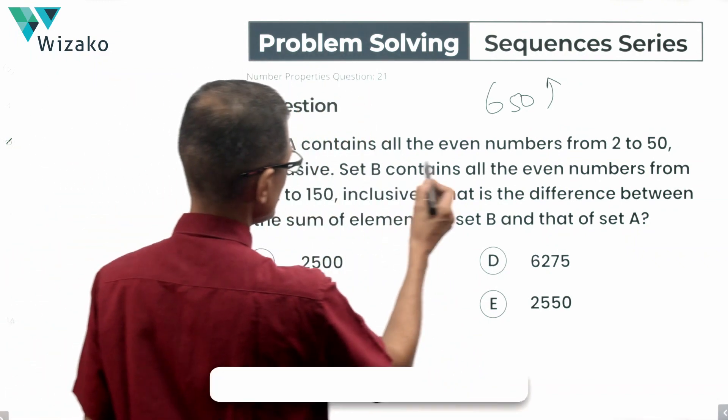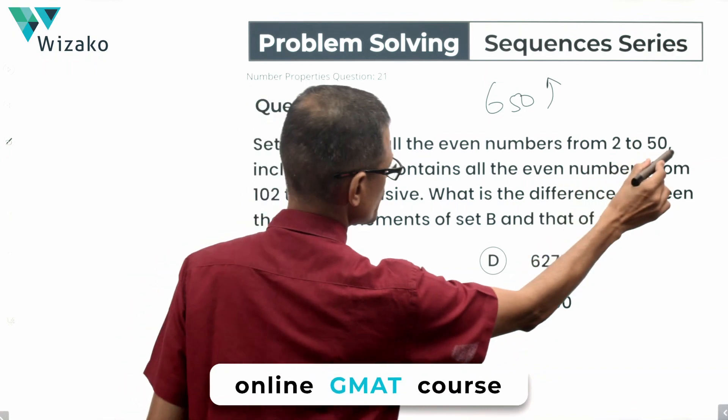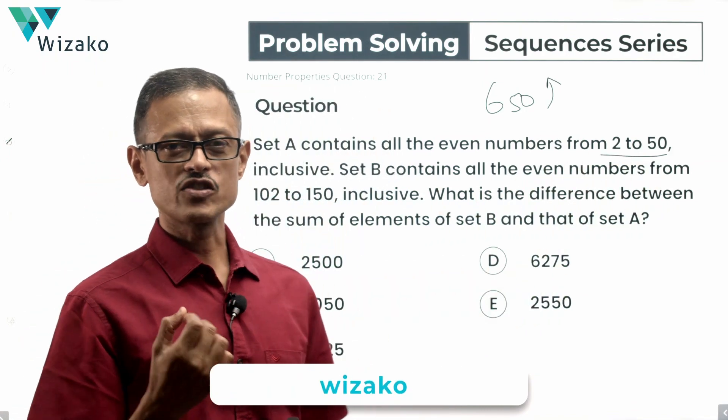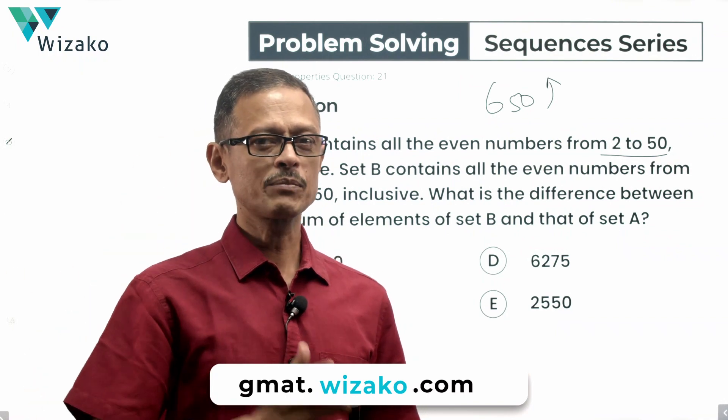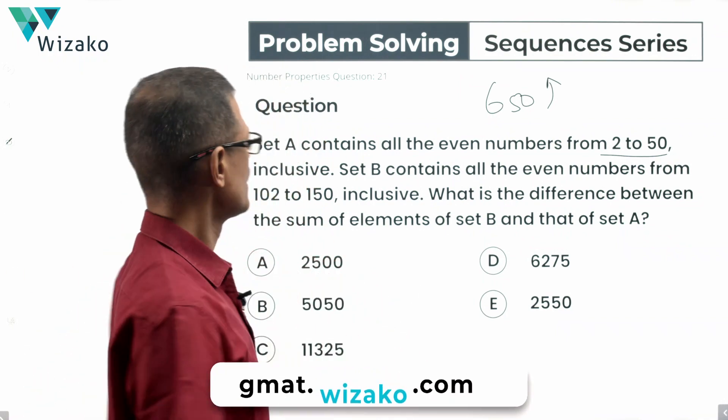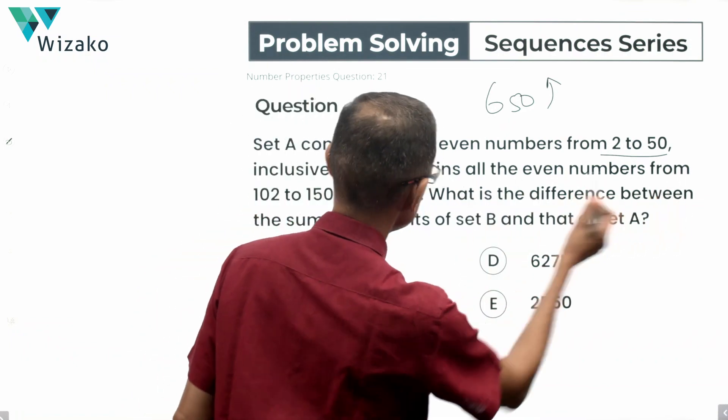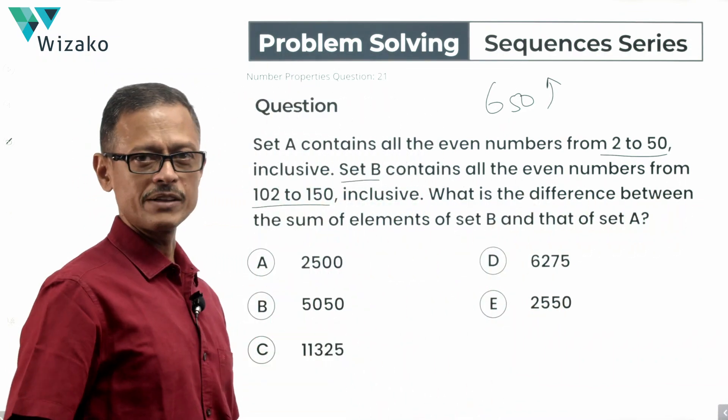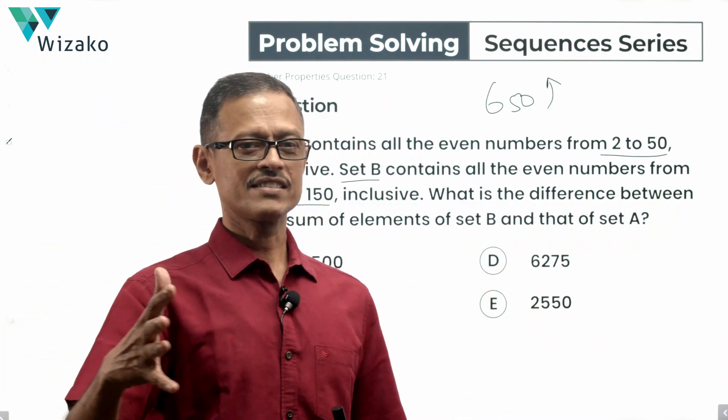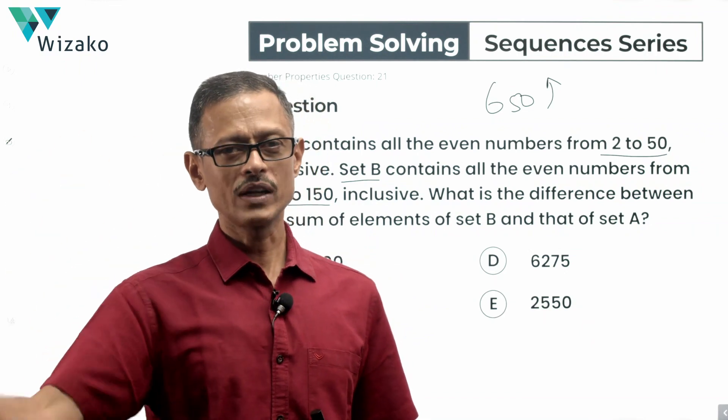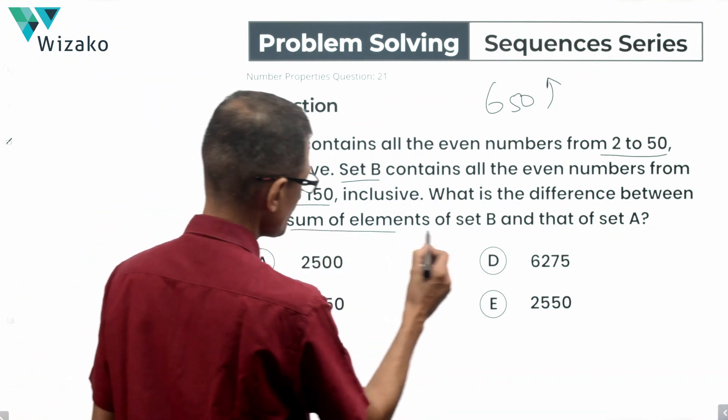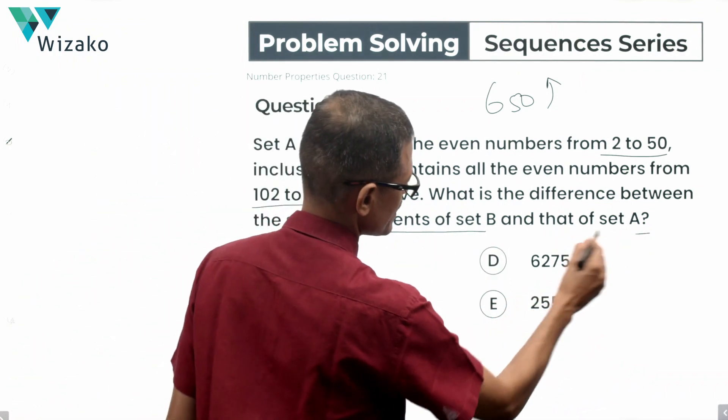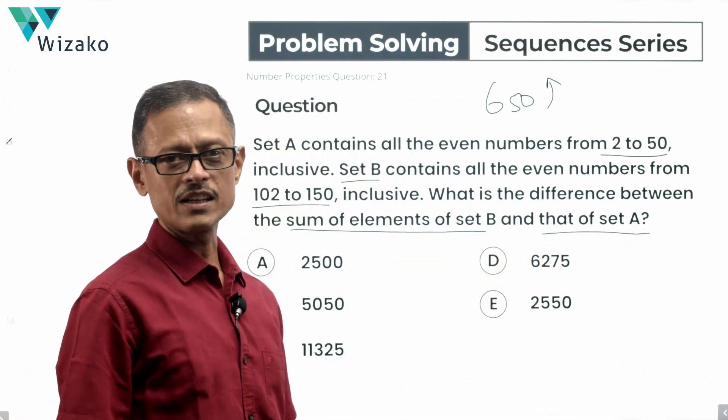So read the question: Set A contains all even numbers from 2 to 50 inclusive. The smallest positive even integer is 2, we are going all the way up to 50, adding all these even integers. They are in an arithmetic progression with a common difference of 2. Set B contains all even numbers from 102 to 150, another set of even integers starting from 102 all the way up to 150. What is the difference between the sum of elements of B and the sum of elements of A? That is what we need to compute.